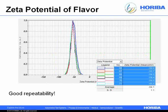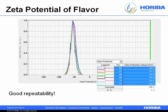The software makes it easy to find the average and standard deviation of a group of measurements. Six repeats of a flavor emulsion give an average zeta potential of minus 54 millivolts with a standard deviation of 1 millivolt, indicating very likely stable suspension. That prediction proved correct — the suspension sat on the desk for quite a while and did not separate.